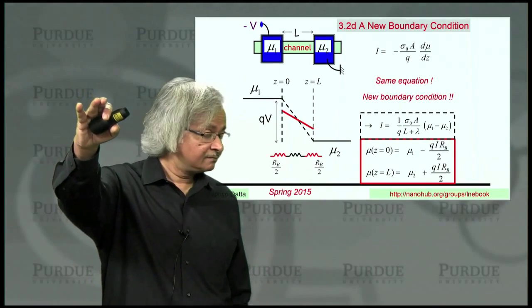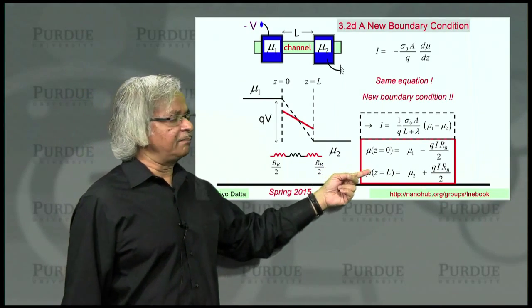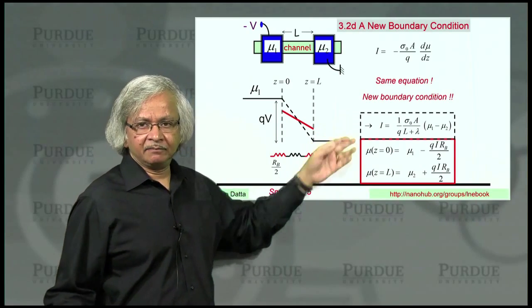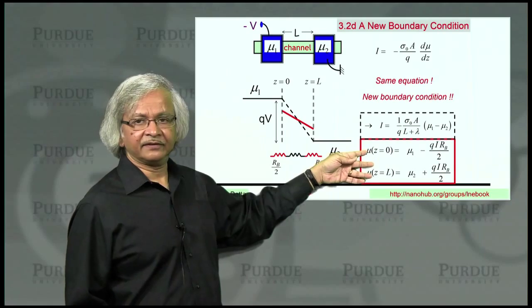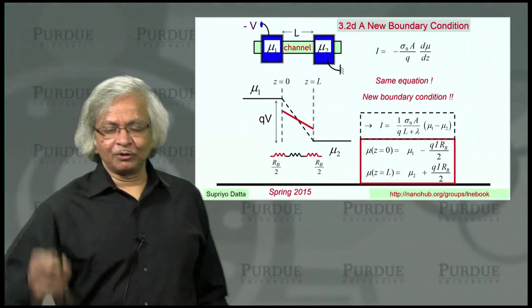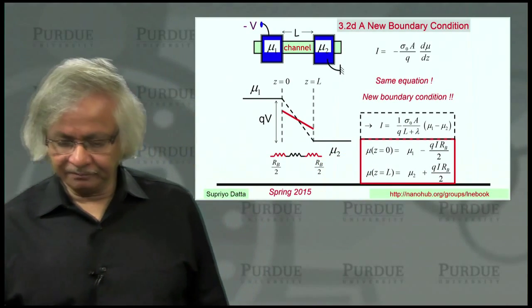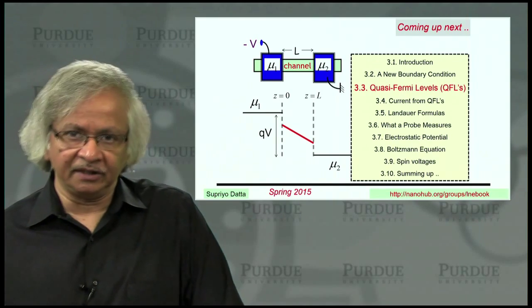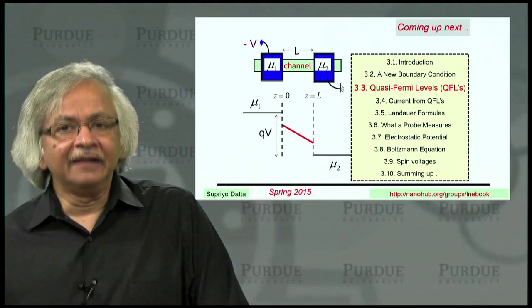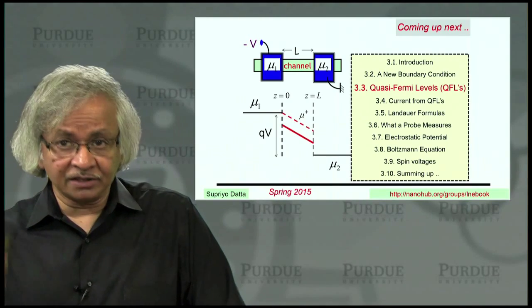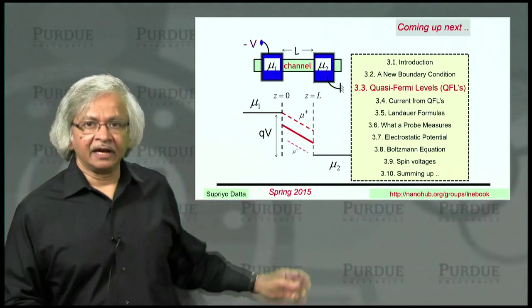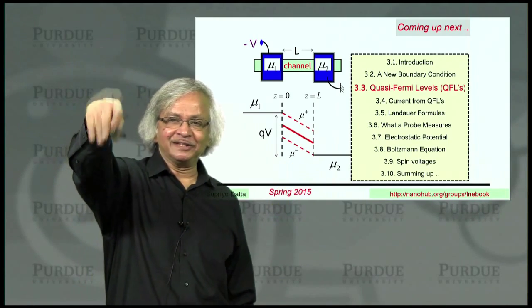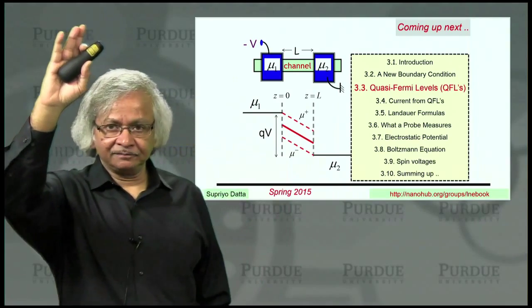So what we have shown you is that this boundary condition gets you the right answer. But what you might ask is, well, where did that boundary condition come from? I can see that it gets me the right answer, but you just put it in there. How can you justify this? Well, that's what we'll do in the next lecture. Because this requires us to bring in this concept of quasi-Fermi levels, the idea that left-moving carriers have one quasi-Fermi level and right-moving carriers have another quasi-Fermi level. But I'm getting ahead of myself. That's for the next lecture. Thank you.